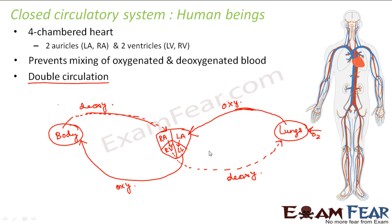The higher rate of oxygenated blood flow enables birds and mammals to maintain high activity levels. Warm-blooded animals — that is birds and mammals — need extra energy to maintain their body temperature. The high rate of flow of oxygenated blood helps them maintain their body temperature, and that is why we do not want the oxygenated and deoxygenated blood to mix. That is why the separation is done, and therefore they have a four-chambered heart.